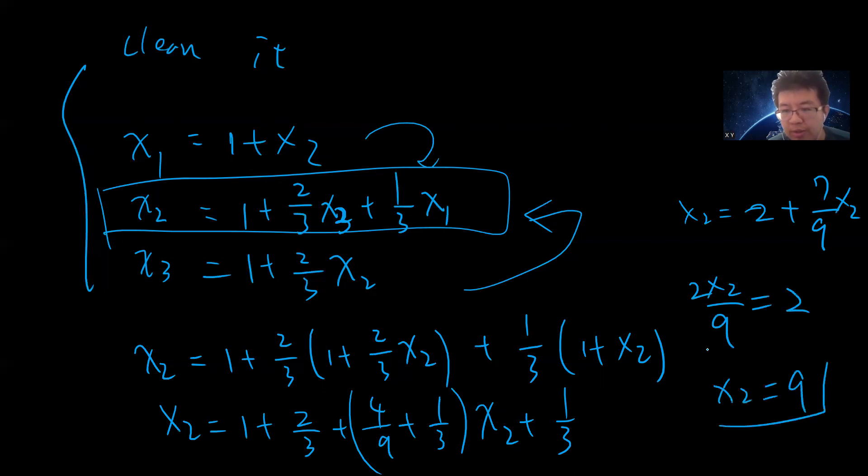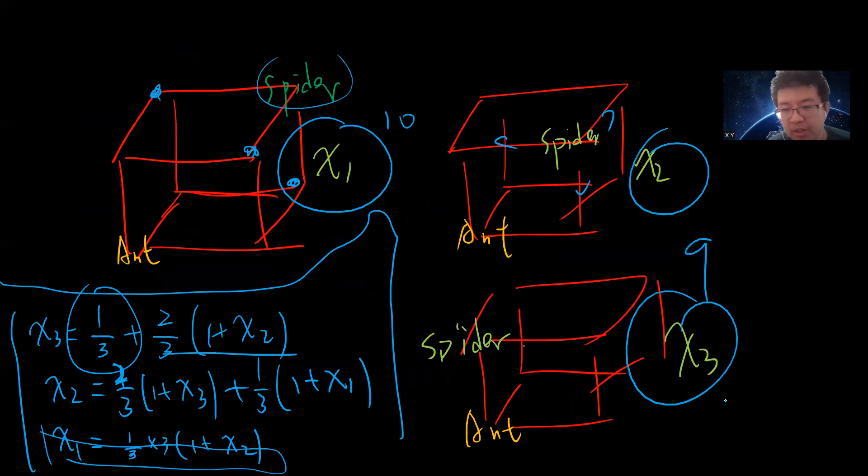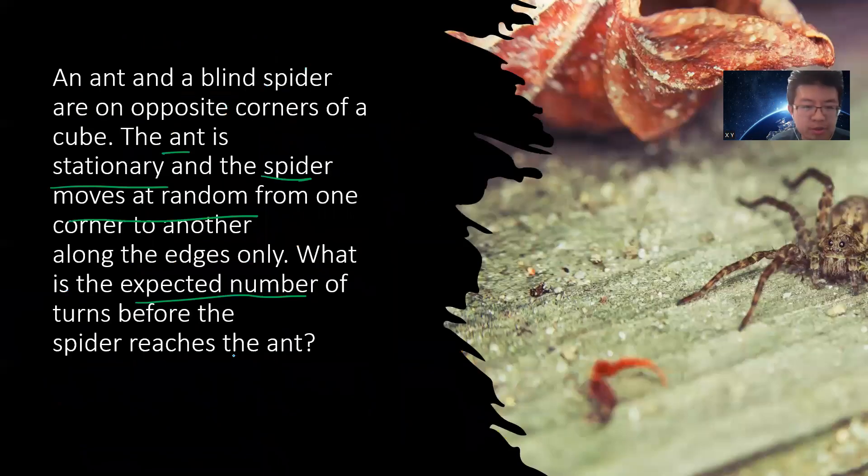So which means that x1 is 10, and x3 is 7. So now we have answer 10, 9, 7. Let's go back. 10, 9, 7. So the answer is 10. That's it, see you guys next videos.